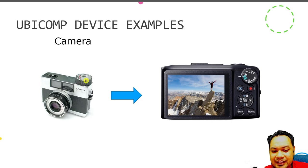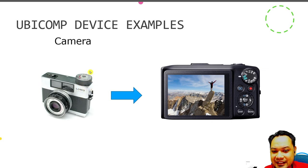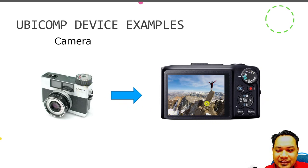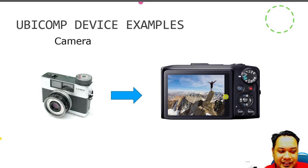The analog camera has a lot of weaknesses: photos can come out blurry, you cannot preview what you have taken, and storage is very limited. Enter the digital camera. Things that you use every day have been integrated with a computer without you realizing it.